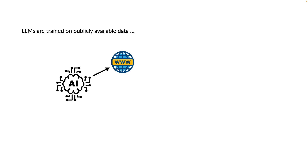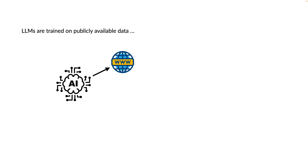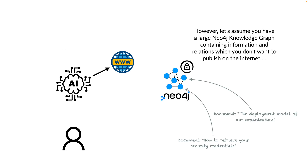Let's kick this off by understanding what RAG actually is. LLMs are trained on publicly available data and can therefore answer common sense questions — for example, 'list three ideas for a New Year's party theme,' and the AI would reply with three ideas.